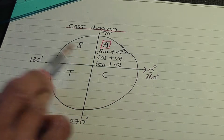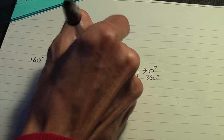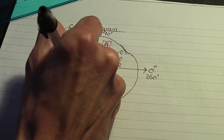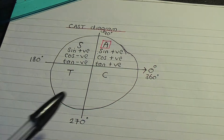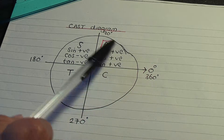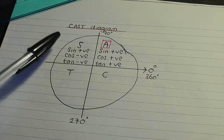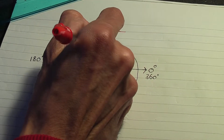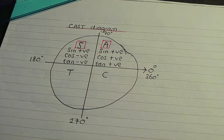In the second quadrant, we label that S because only sine is positive. The remaining two ratios, cos and tan, are negative. Going back to the second quadrant, we label it S because only sine is positive and cos and tan are negative.